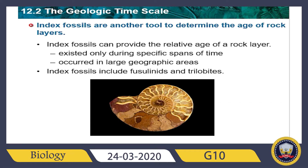As you can see in this figure, the extinct marine invertebrates known as fusulinids are the most common index fossils that most scientists use. They were at one time very common but disappeared after a mass extinction event about 251 million years ago.